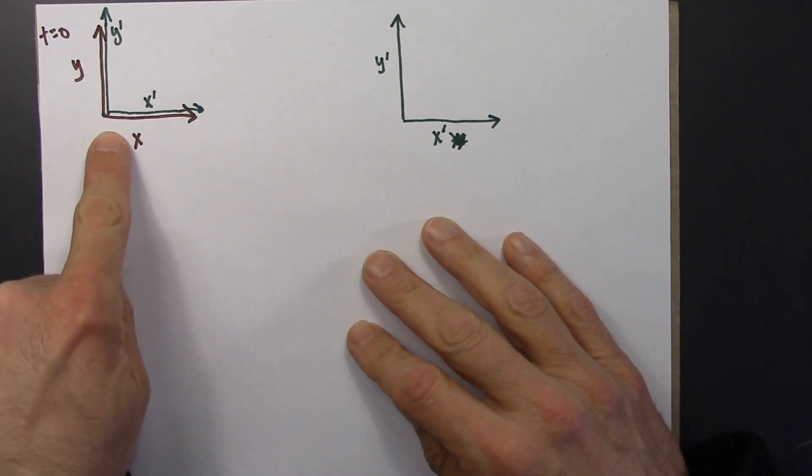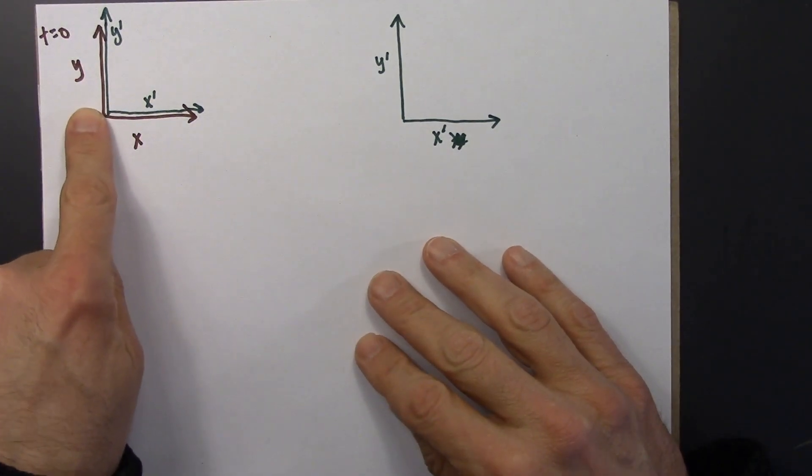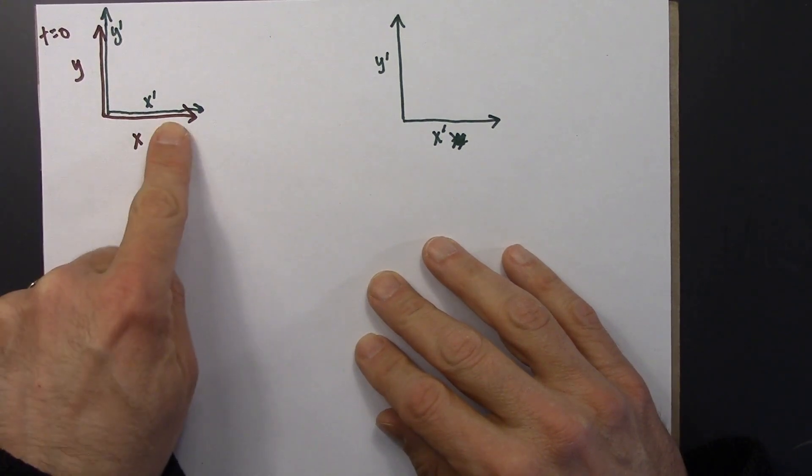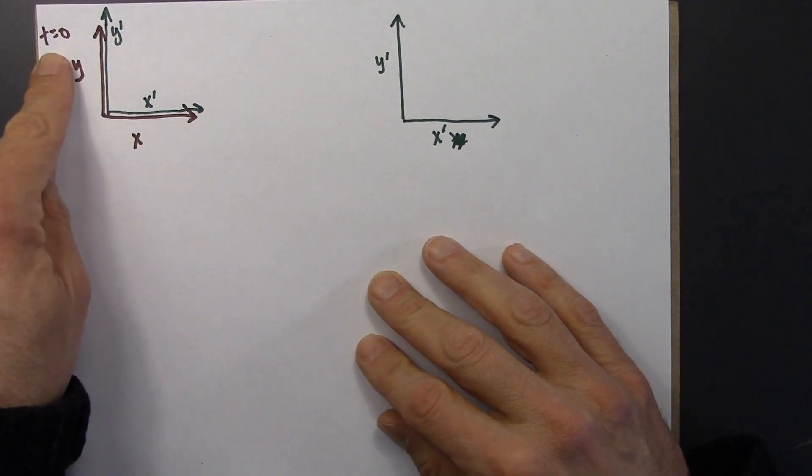So they would record measurements the same way. They have the same origin, and we'll say that this coincidence of these two reference frames occurs at time t equals zero.